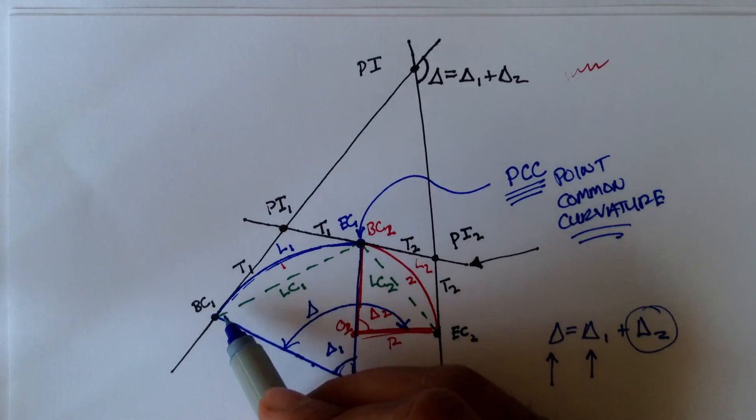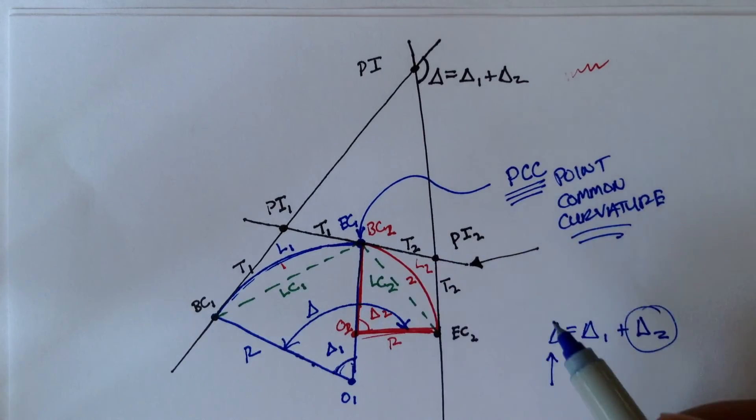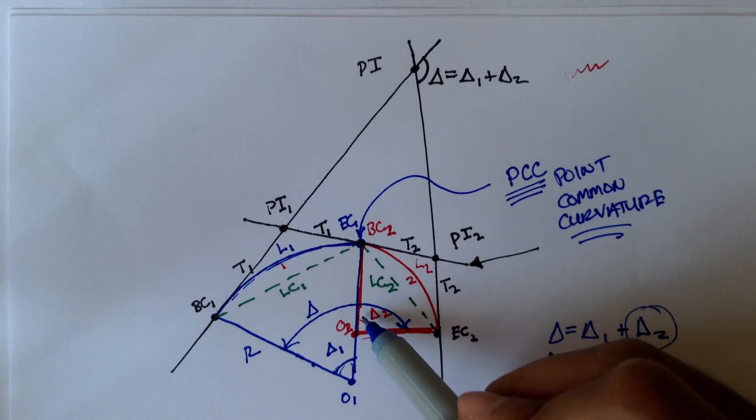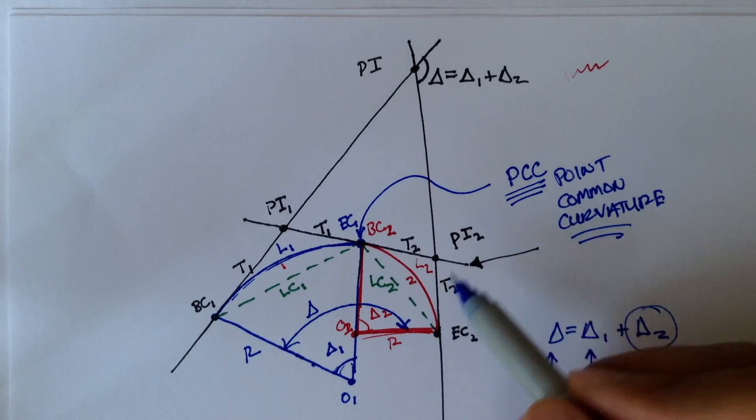Delta 1 is the interior angle for this blue curve, or curve 1. And delta 2 is the interior angle for curve 2, or this red curve.